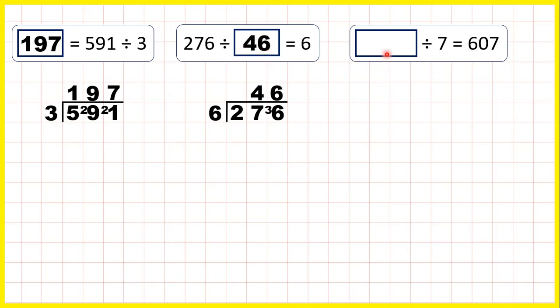Now we have something divided by 7 equals 607. So our dividend is missing, and that means we need to use multiplication to find our answer. Remember division is the inverse of multiplication.